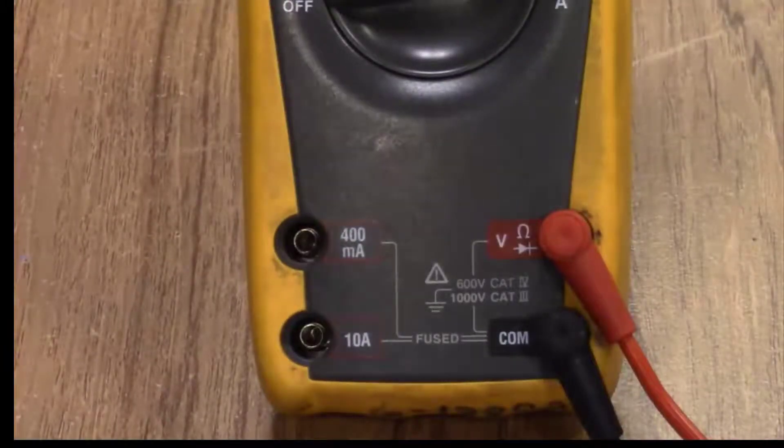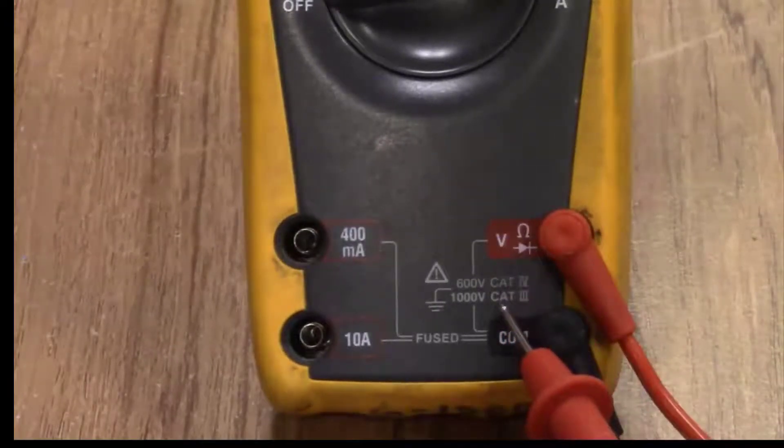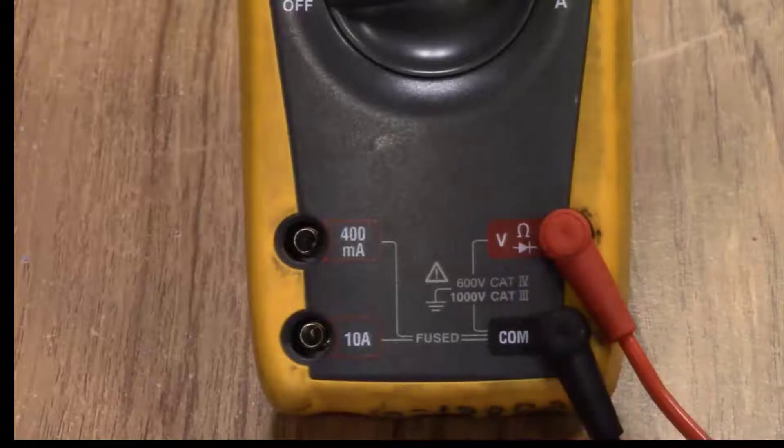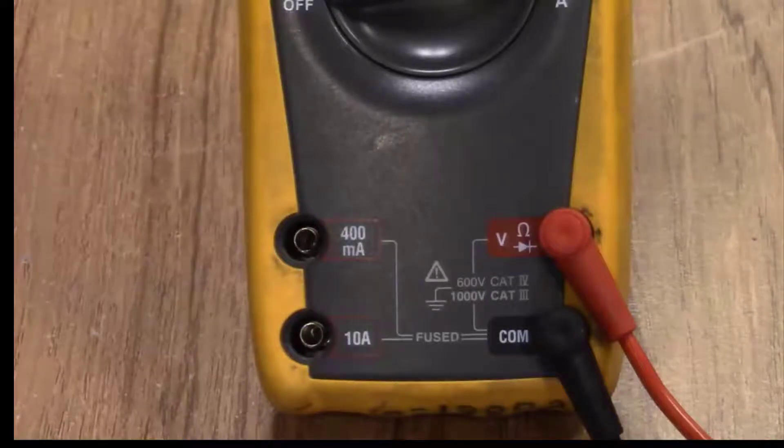On the bottom of the meter you'll see a couple things. You'll see your cat ratings. Different cat ratings are for different applications and maximum measurements so you always want to consult your manual to make sure that you're using the right category rating for the application that you're using.